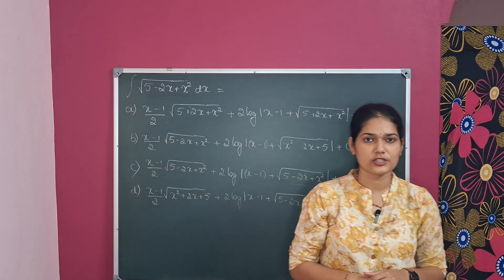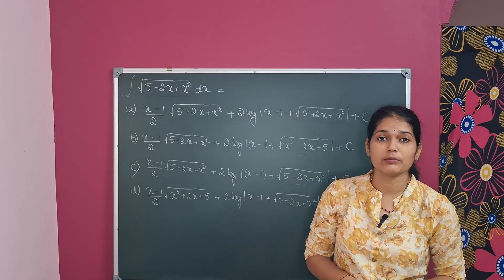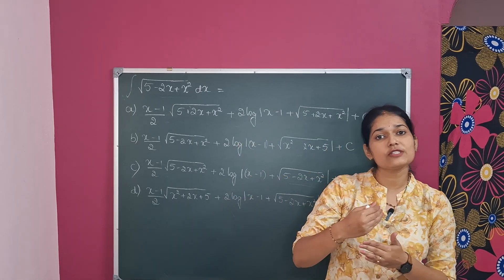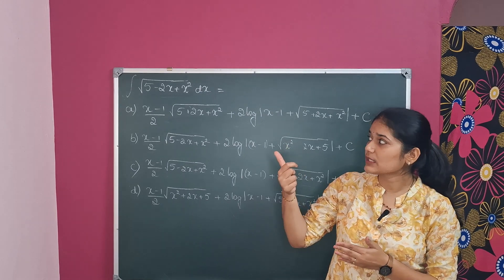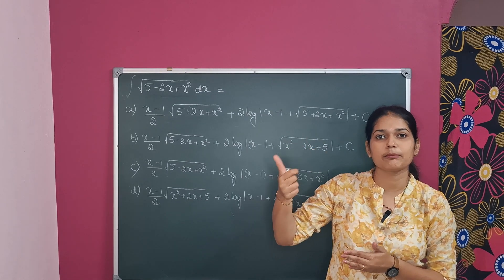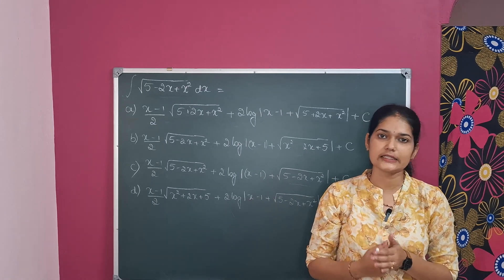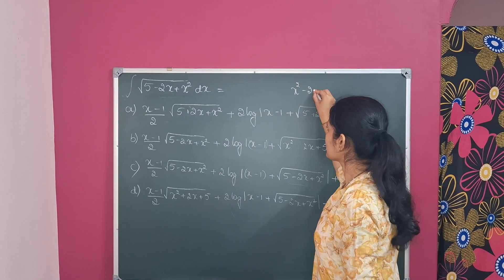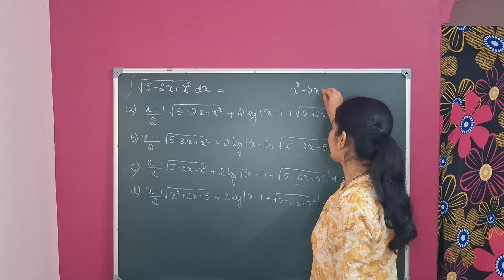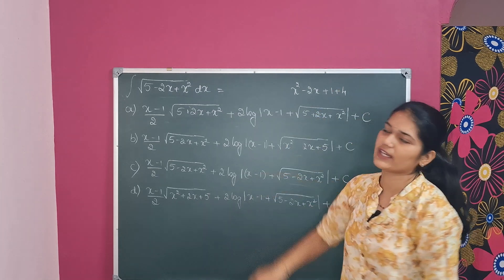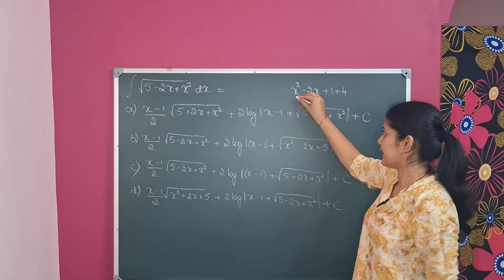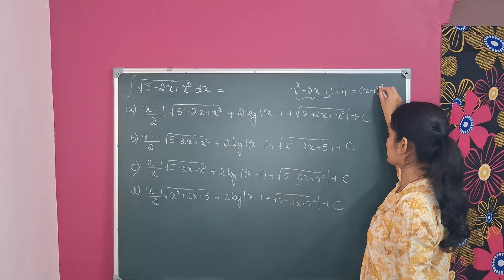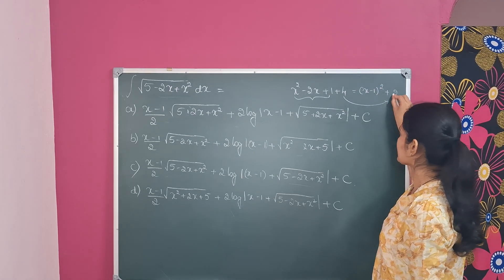Here is a problem which was asked in 2023. They have given the integral of root of 5 minus 2x plus x square. We have to simplify the given function — that is, simplify 5 minus 2x plus x square using the completing the square method. This can be written as x square minus 2x plus 5, splitting 5 as 1 plus 4, giving x minus 1 whole square plus 4, which can be written as 2 square.